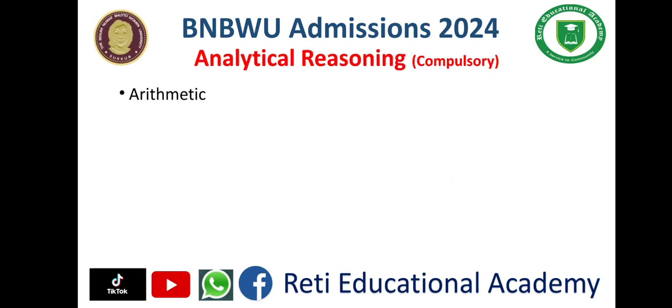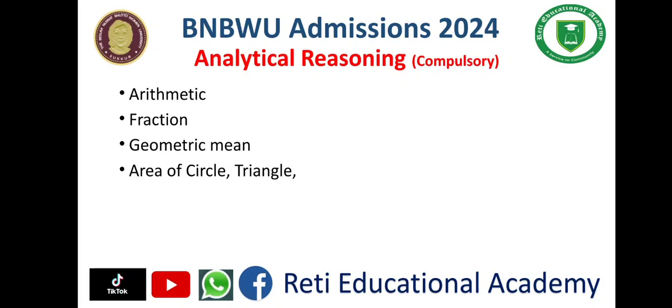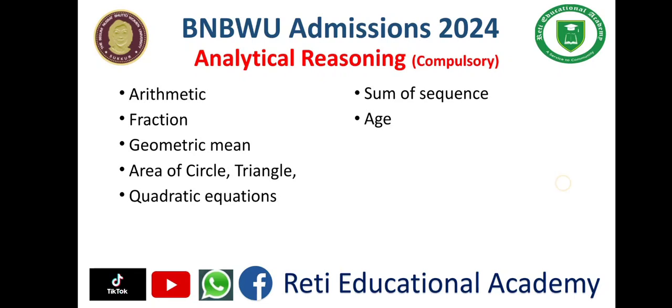For analytical reasoning, these topics are effective: arithmetic, fractions, geometric mean, area of circle, triangle, quadratic equations, sum of sequence, age problems, and work and time. You have to prepare according to these topics for the analytical reasoning section, which is compulsory for all candidates appearing in BNBWU.